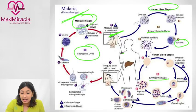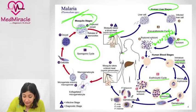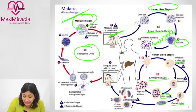These merozoites then affect the RBCs. Inside the RBCs, they form trophozoites — immature then mature — then into schizonts, which rupture. Alternatively, they can form into gametocytes: male and female gametocytes. If these gametocytes are taken up by a mosquito, the mosquito becomes infected.